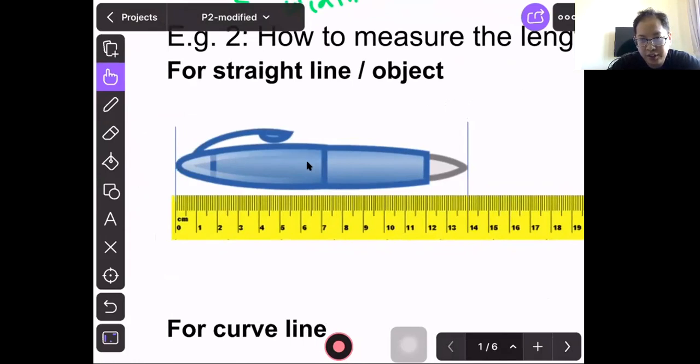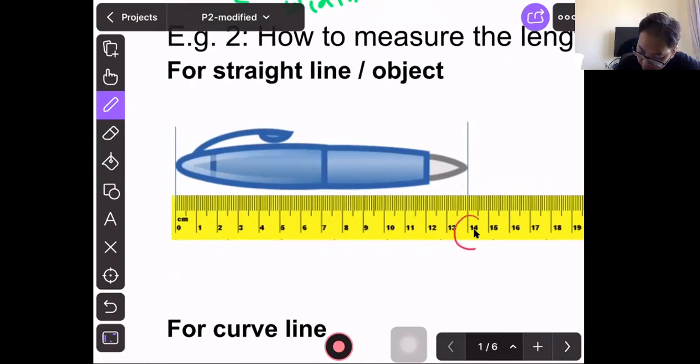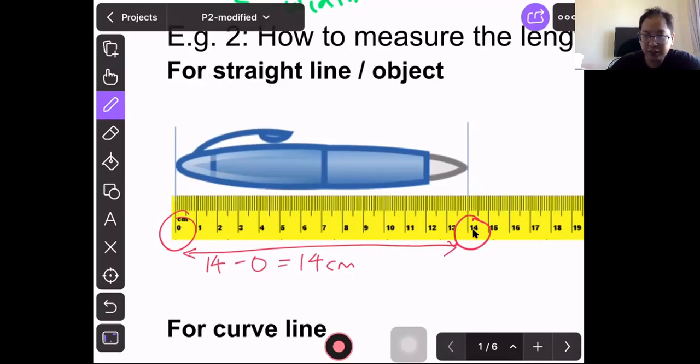We lay it across and the pen itself is 14 cm. From 0 to 14, it's about 14 cm, because 14 minus 0 equals 14.